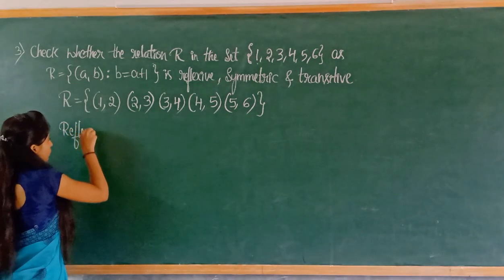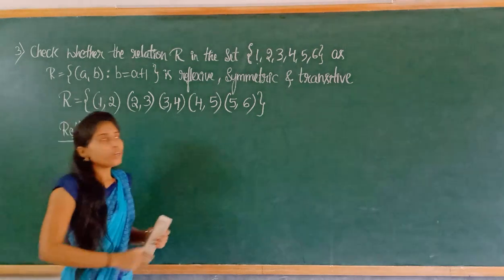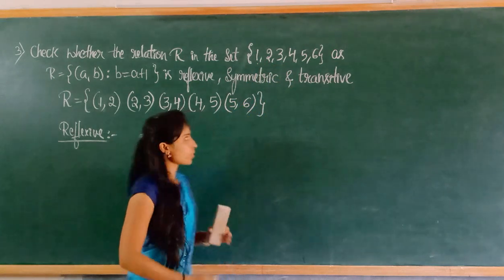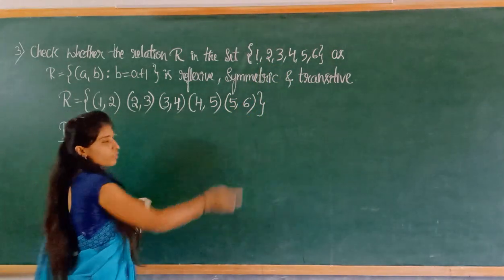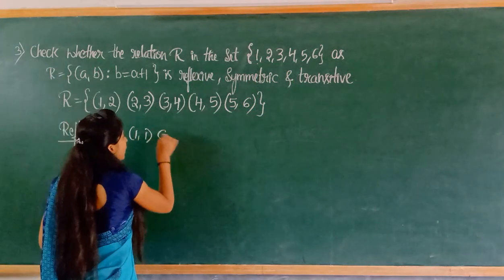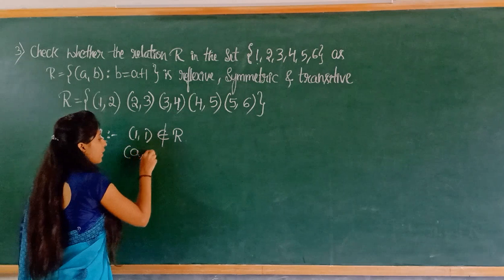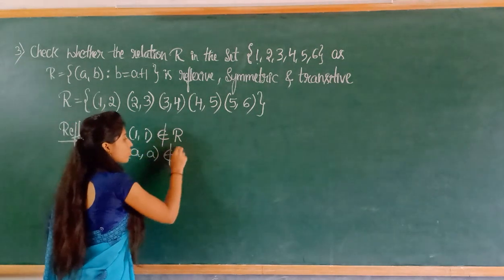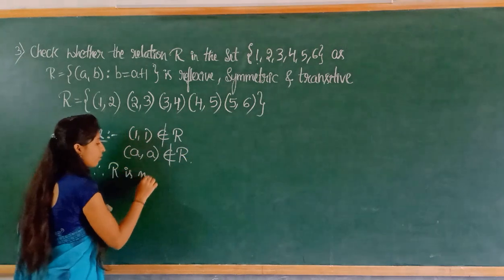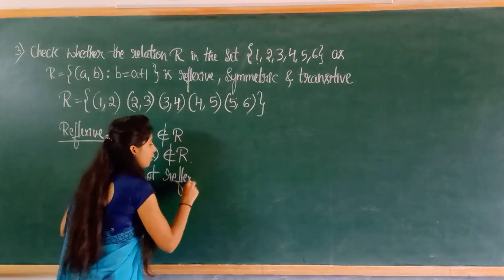First, reflexive. For reflexive, all elements of set A should have a double pair. But in this relation, no double pair is present. So (1,1) does not belong to R. Therefore, (a, a) does not belong to R, and R is not reflexive.